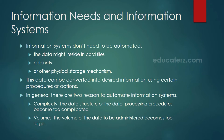Information systems don't need to be automated. The data might reside in card files, cabinets, or other physical storage mechanisms, and this data can be converted into desired information using certain procedures or actions. In general, there are two reasons to automate information systems. One is complexity — the data structure or the data processing procedures become too complex. In that case, we have to automate information systems.